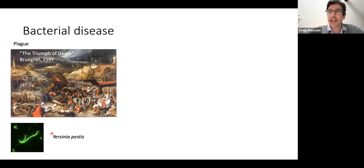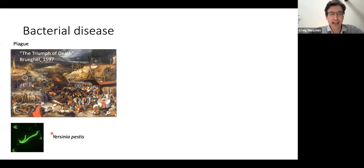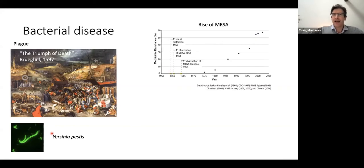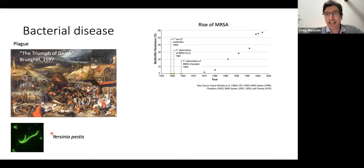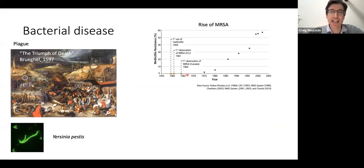For much of human history, bacterial infections have been a leading cause of disease and death. One interesting way to appreciate this is Bruegel's 'The Triumph of Death,' showing the social upheaval and destruction caused by the plague in 16th century Antwerp. Much of the reason bacterial disease is no longer such a problem is because of the use of antibiotics, which has driven the spread of resistance — as illustrated by the rise of MRSA.